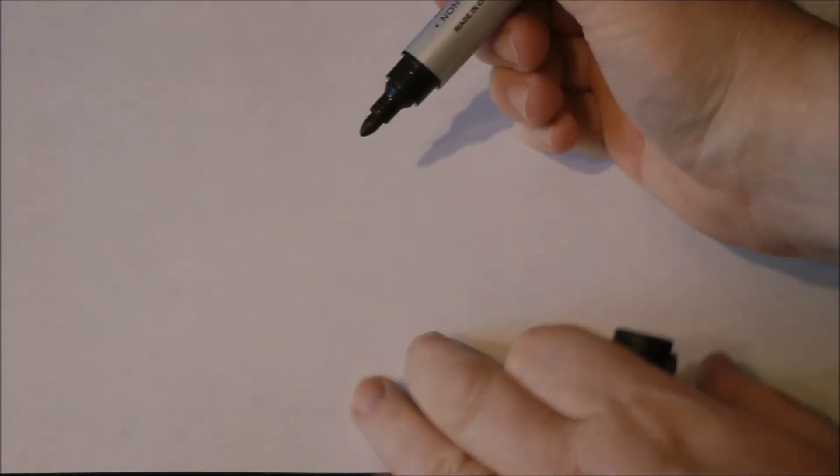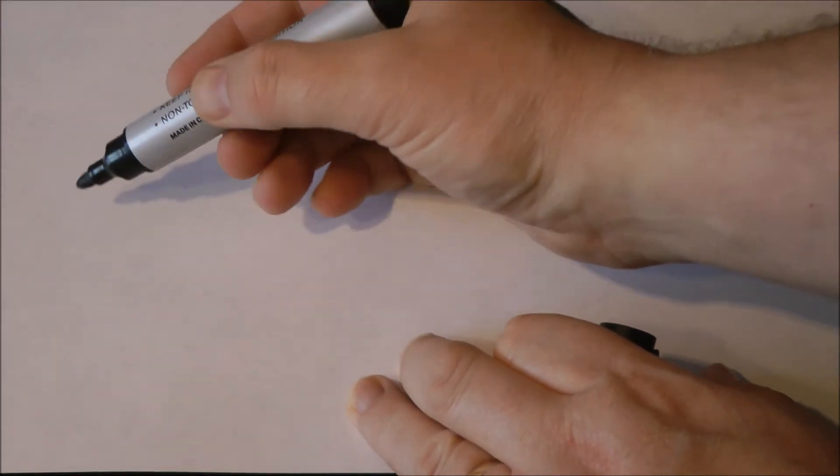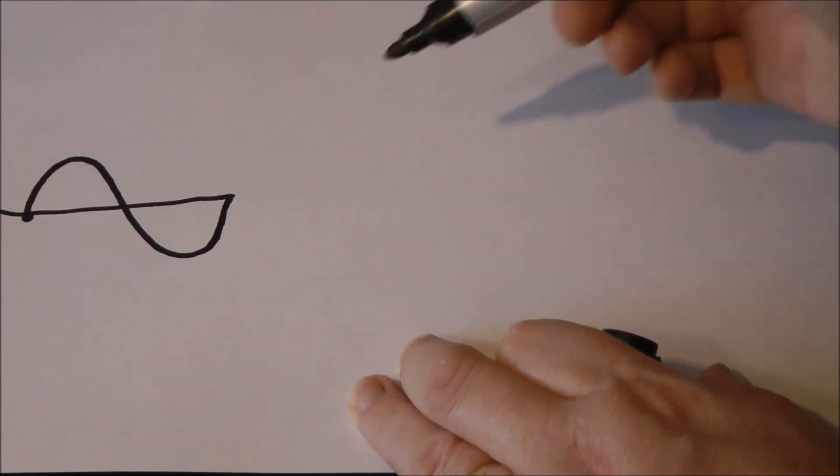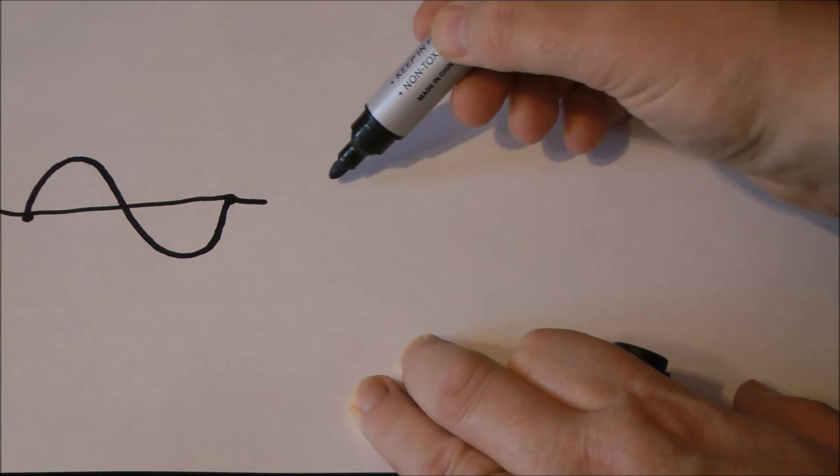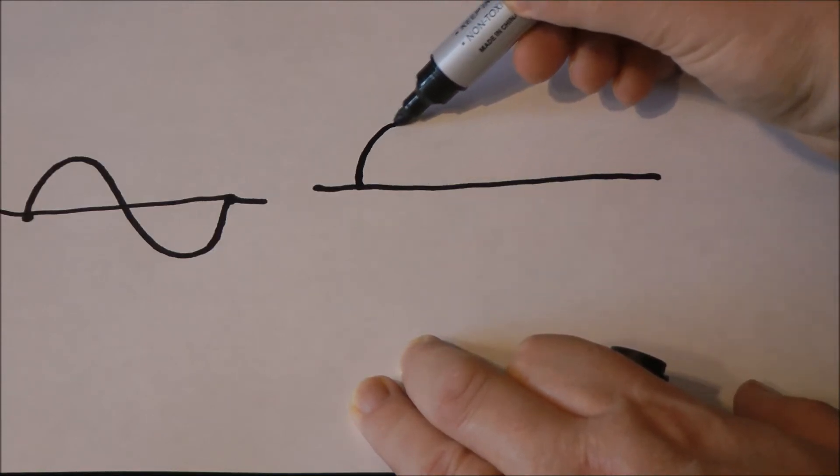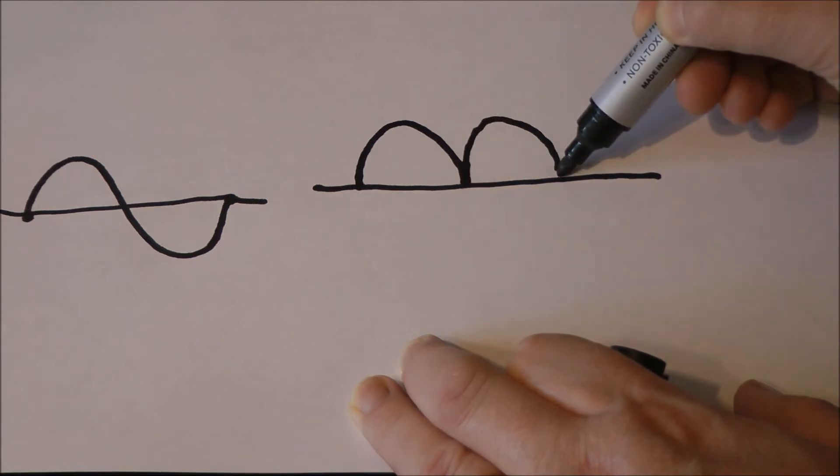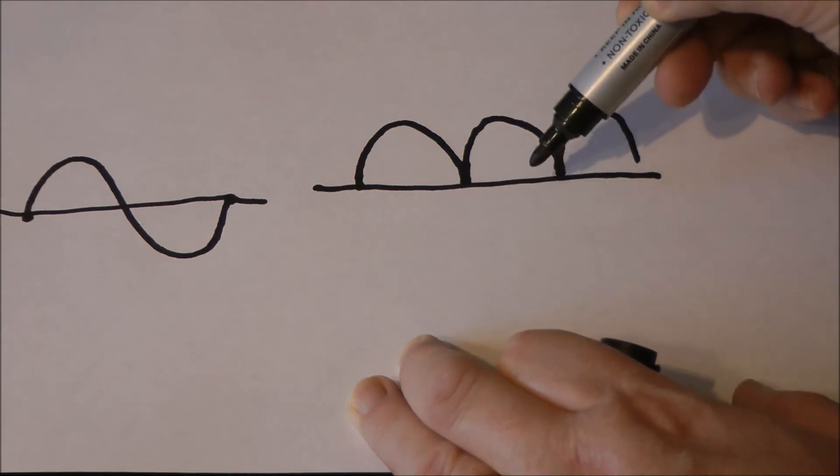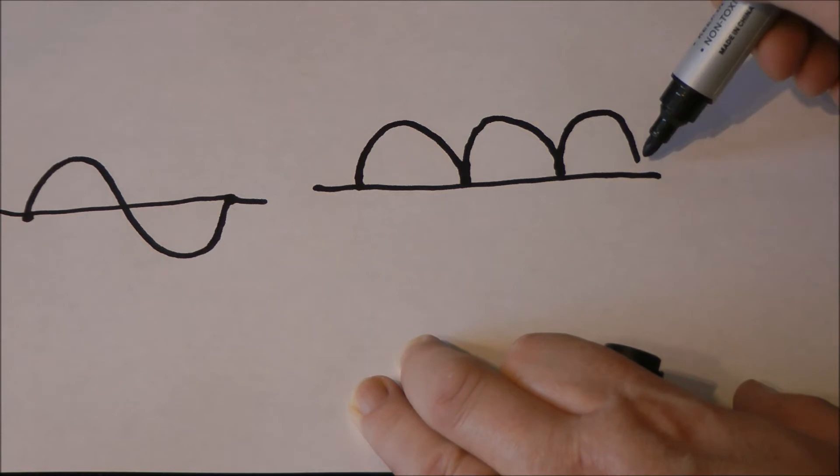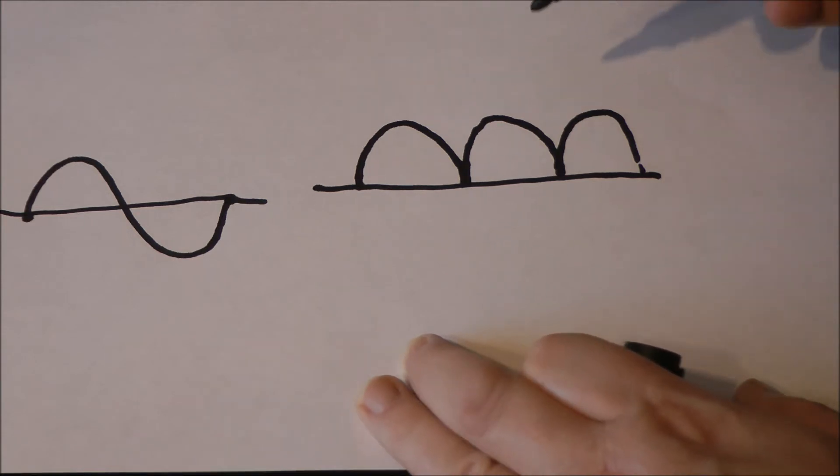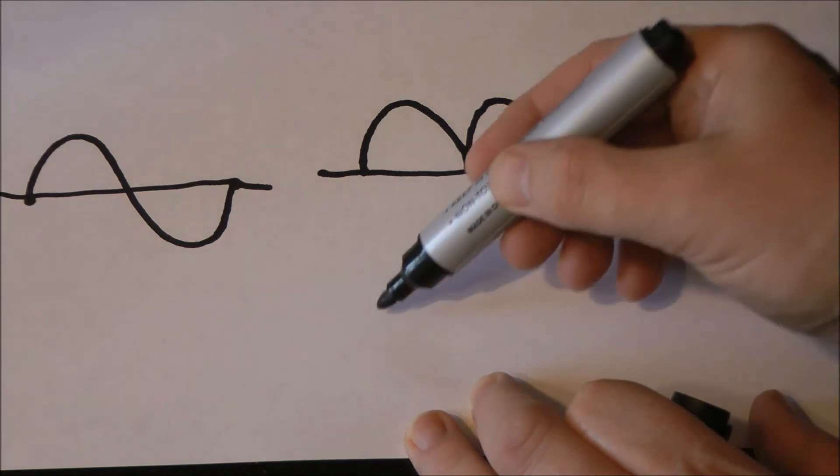What the rectifier does is, well, you've got an AC waveform that looks typically like that. What it will do is rectify that effectively. So what you will get is, where that would normally come down here, it inverts it. Well, a bit of an oversimplification, but that's what it does. So you get a Loch Ness monster waveform.